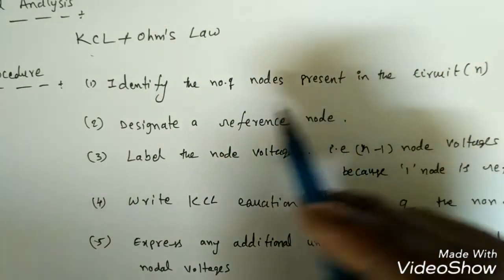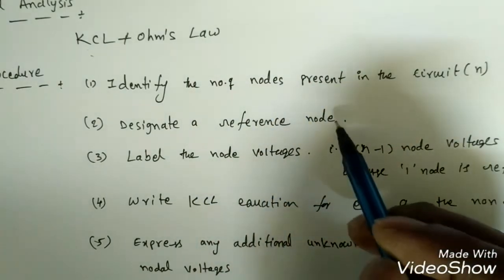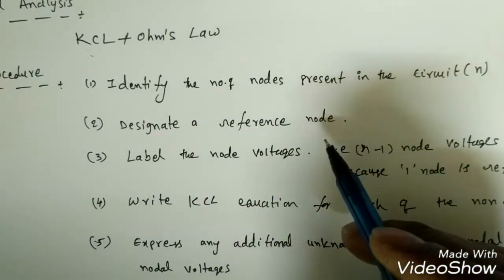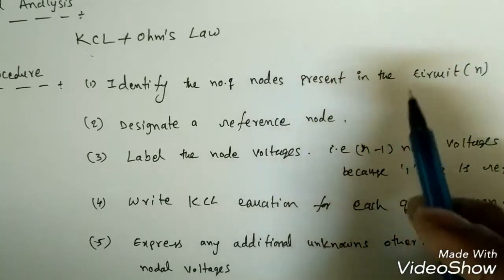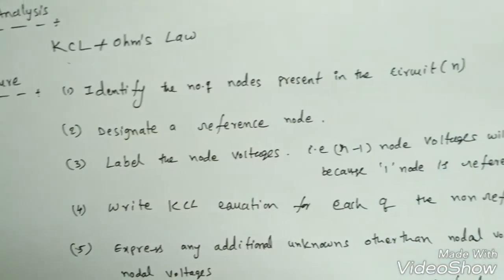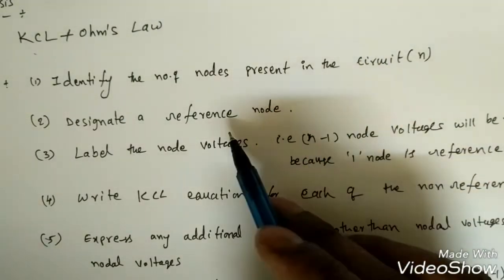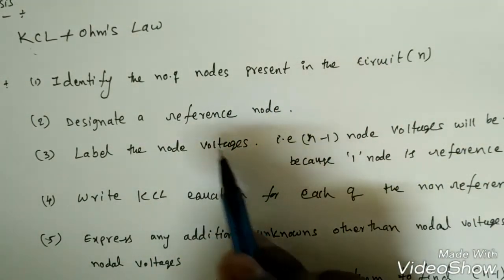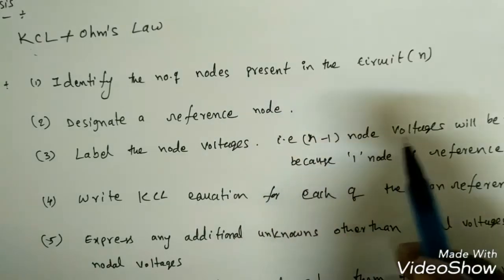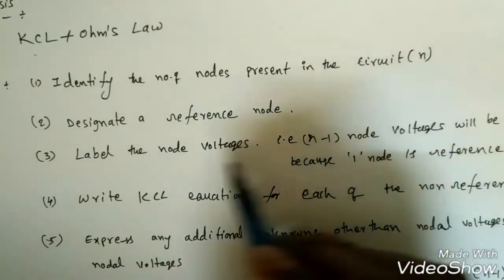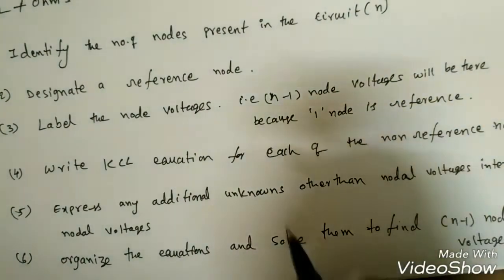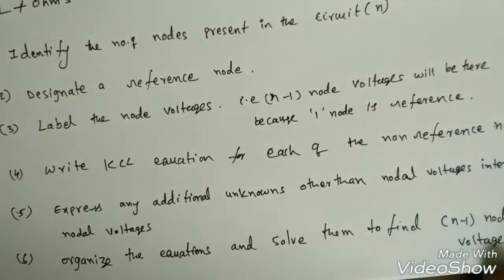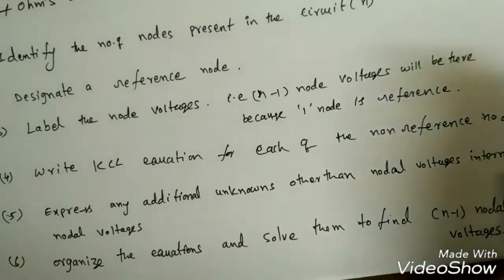Once we find the number of nodes, first we have to designate a reference node, which is common to all the nodes or all the branches. The reference node is generally taken as a zero volt node. Other than this reference node, there are n minus 1 node voltages, which we label as V1, V2, etc. Next, we write the KCL equation for each of the non-reference nodes.